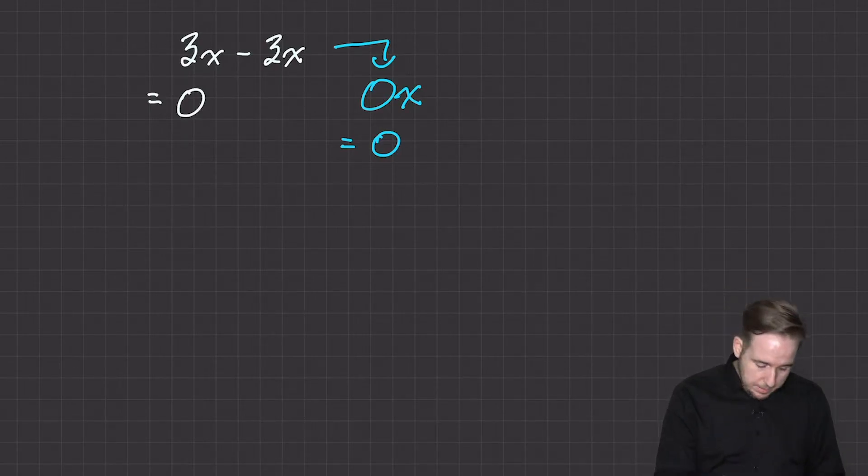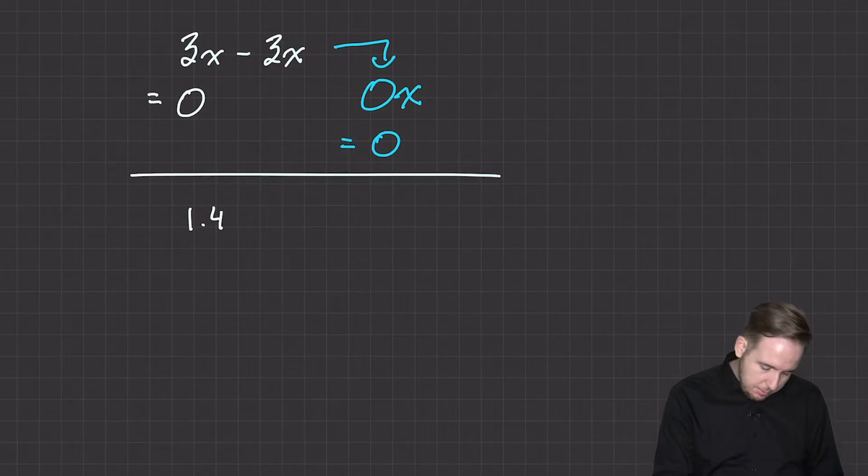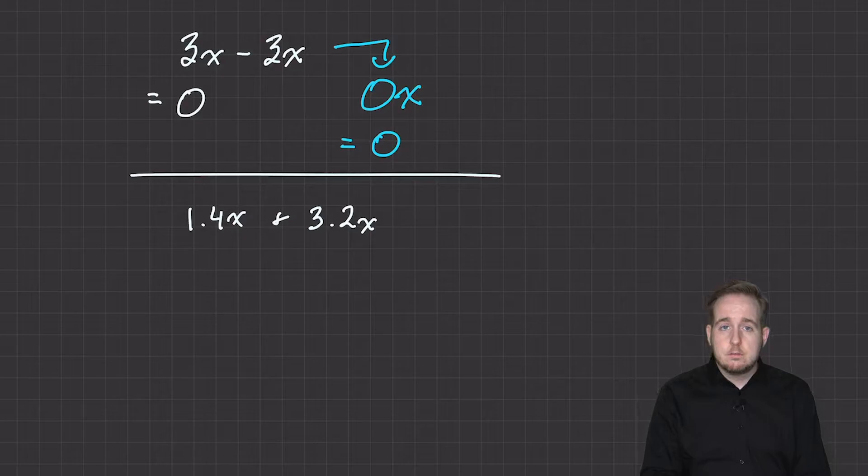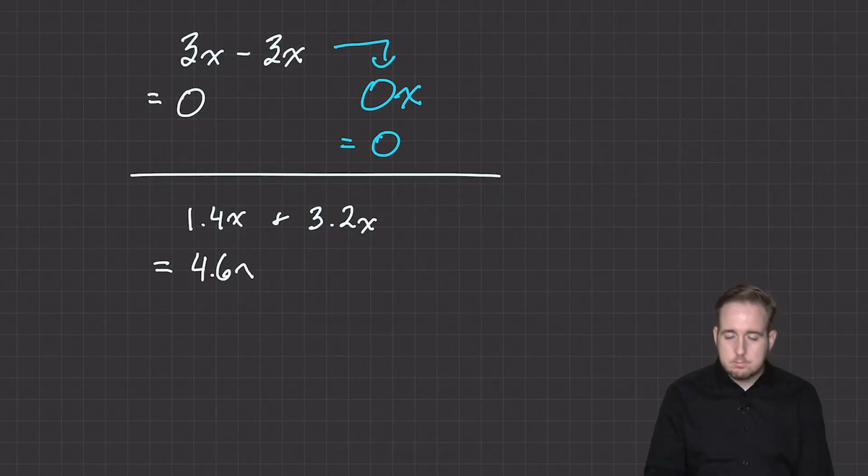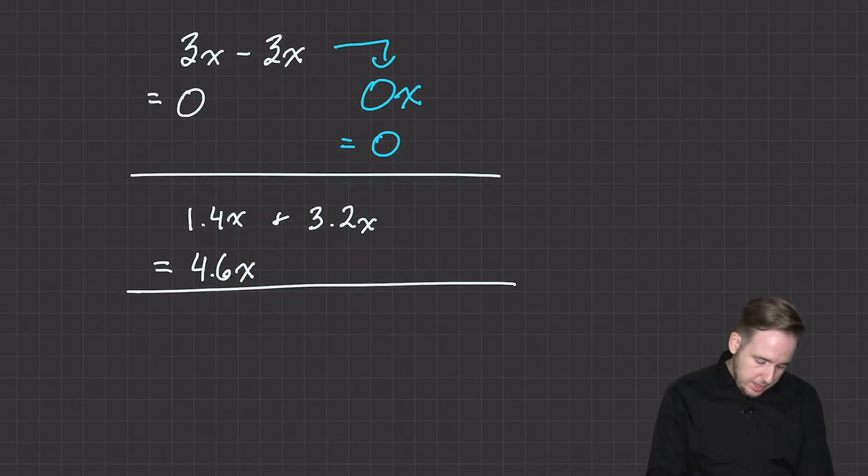So someone might do it in two steps, someone might do it in three steps, somebody might do it this way, somebody might do it that way. But as long as they're able to consistently get the same answer, then you're kind of onto something. By the way, this gets even more complicated. What happens if I have a decimal? What happens if I have 1.4x plus 3.2x? So the rule works just as well, right? And you can imagine having like bags of something that are fractions full. So 1.4 plus 3.2, that would be 4.6x. Works the same.